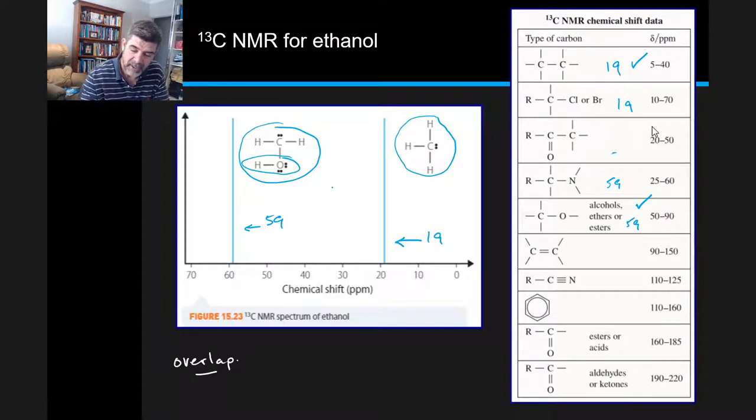What we have here in general are two peaks. Now, two peaks tells us that there's at least two carbons. It's possible that if the molecule is symmetrical and therefore the types of environments that we find for the carbons are similar,